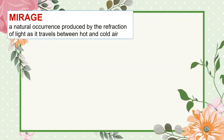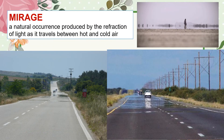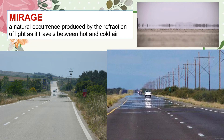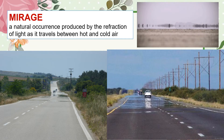Mirage is a natural occurrence produced by the refraction of light as it traverses between hot and cold air. It is mostly observed on a straight highway at noontime when the sun heats up the road to high temperature. It is an illusion of water on the highway on a very hot sunny day.